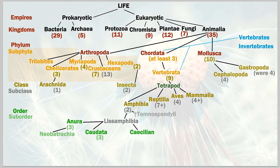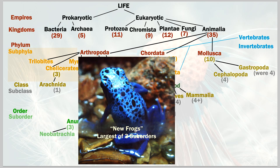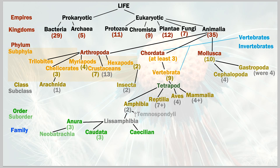The suborder we're exploring is neobatrachia — basically considered 'new frogs' — and it's the largest suborder, containing the most species. At the next grouping level — family — neobatrachia has 31 different families of frogs within it.